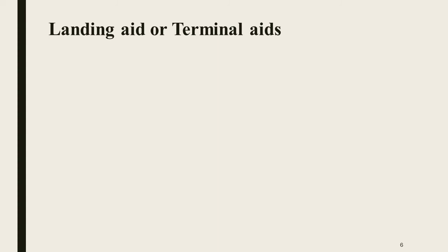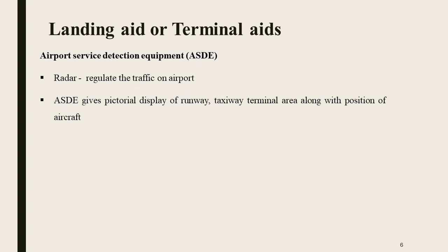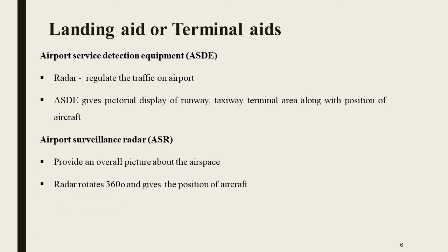Landing aids, also called terminal aids. First, Airport Surface Detection Equipment, ASDE. Radar is used to regulate the traffic on the airport — runway, taxi, and terminal area — providing a pictorial display. Next, Airport Surveillance Radar, ASR, which covers the overall airspace in a 360-degree rotation to determine aircraft position.